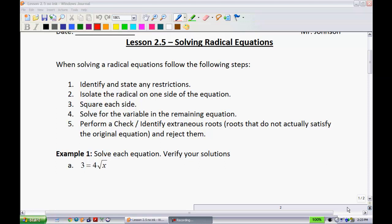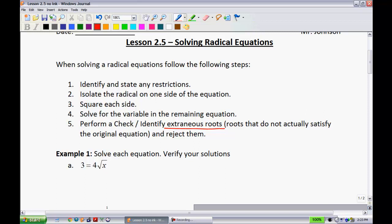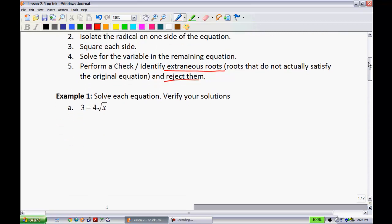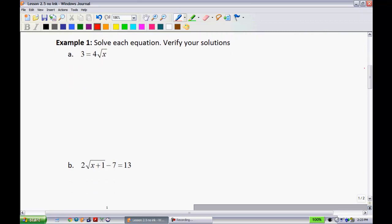Square each side. That's basically how you get rid of the radical so that you don't have to deal with that anymore. And then we solve for the variable in the remaining equation. And then I want to make sure that we perform a check. We're also going to look at this word right here, what extraneous roots are. It says roots that do not actually satisfy the original equation. And if we have extraneous roots, that means we must reject them. So let's give these a try.